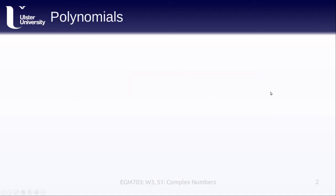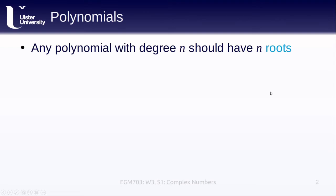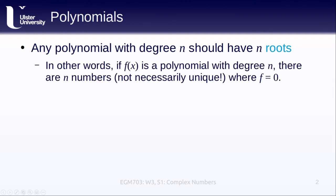Before we dive right in, we're going to start with polynomials. As you will hopefully recall, any polynomial with degree n should have n roots. In other words, if f(x) is a polynomial with degree n, then there are n numbers, not necessarily unique, where f is going to be equal to 0.